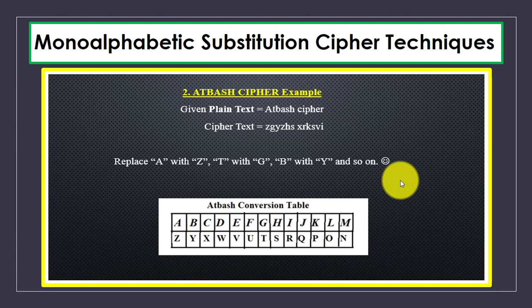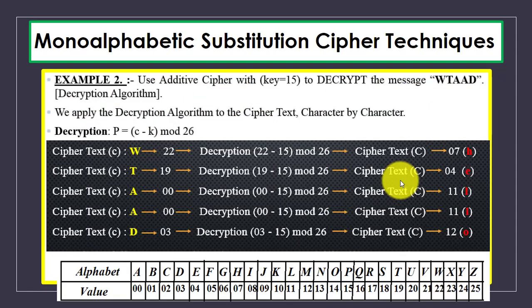That's all about this video. We discussed what is the Atbash cipher technique and what is the monoalphabetic substitution cipher technique — specifically the additive cipher technique — and how we can use a secret key for the encryption and decryption of messages. If you have any questions you can comment below, thanks for watching.